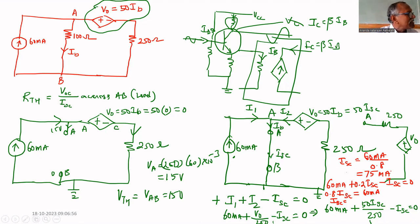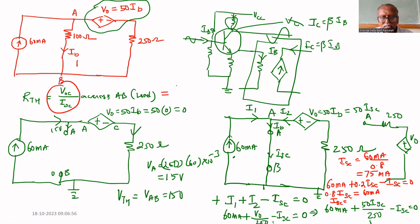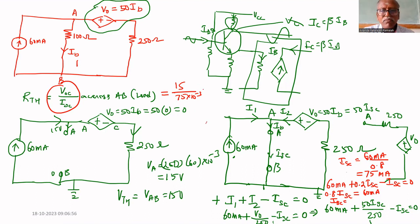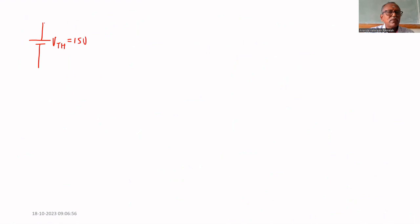R_Thevenin equals V_open_circuit divided by I_short_circuit equals 15 volts divided by 75 milliamperes equals 200 ohms. So V_Thevenin equals 15 volts and R_Thevenin equals 200 ohms.